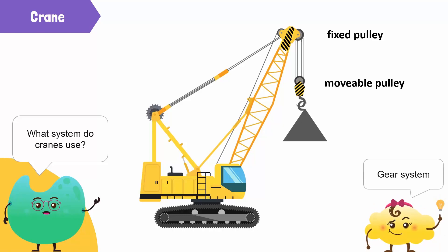Gear system. Very good. In addition to the pulley system, a crane also has a gear system. The gear system provides a large force required to rotate the wheel of the fixed pulley.